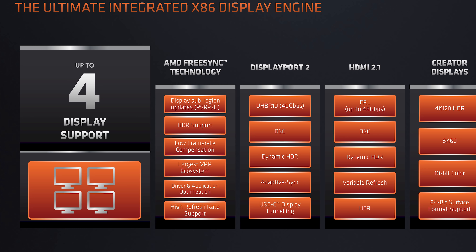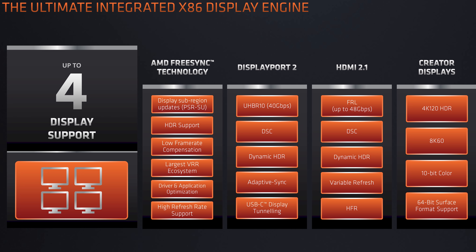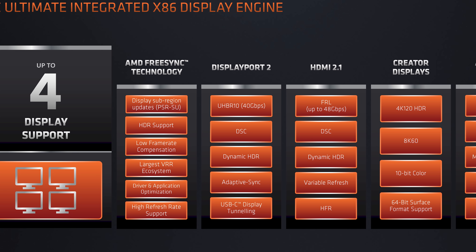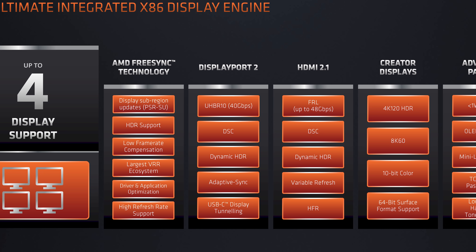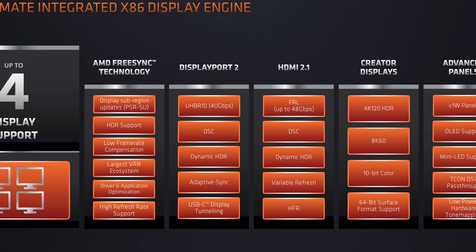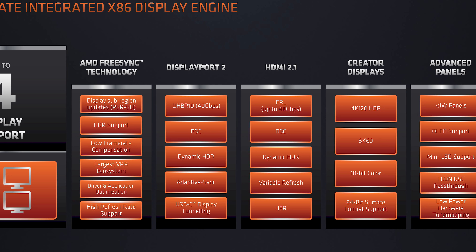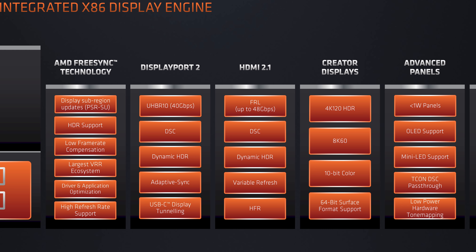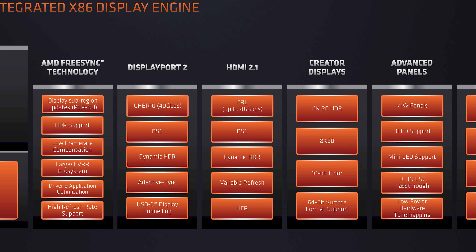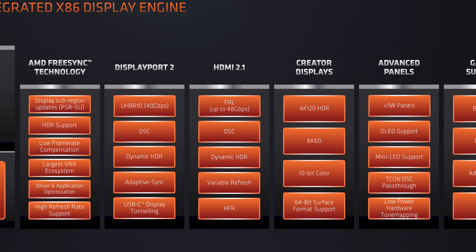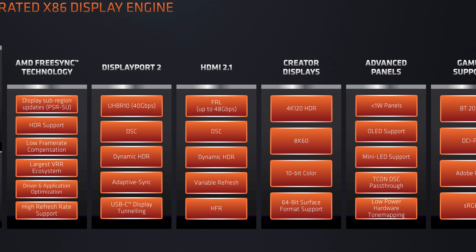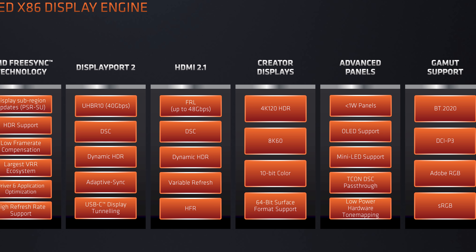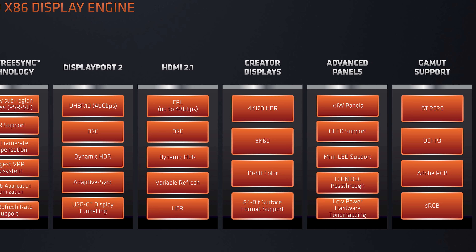The display engine supports HDMI 2.1 at up to 48 gigabits per second — the full HDMI 2.1 spec — and DisplayPort 2 at up to 40 gigabits per second, which is the second-from-highest DisplayPort 2 configuration, so UHBR 10 rather than UHBR 20. This is the first time we've seen a device support DisplayPort 2 outputs, and up to four display outputs are supported, which is more than the standalone discrete Radeon RX 6500 XT GPU.